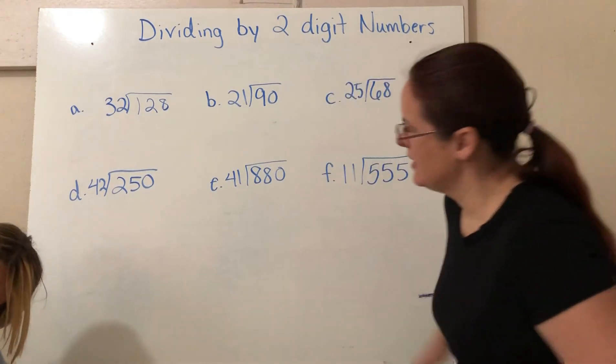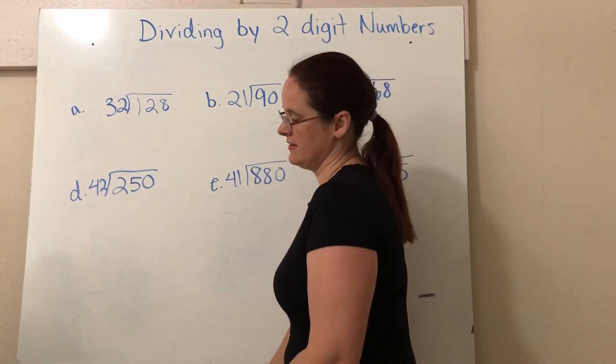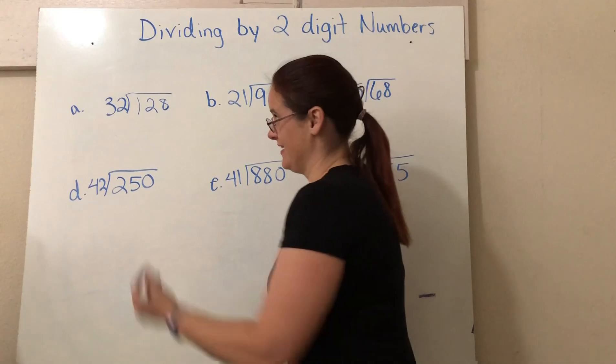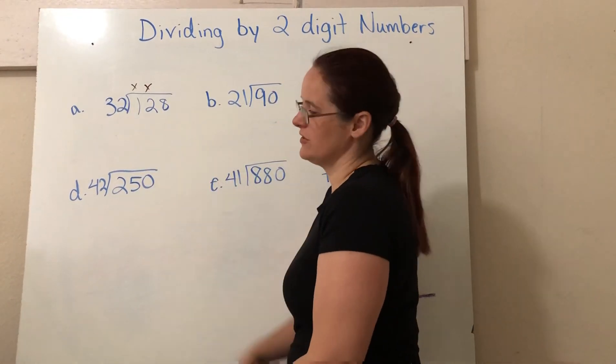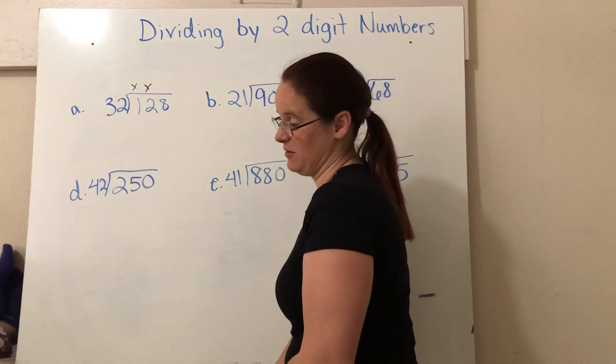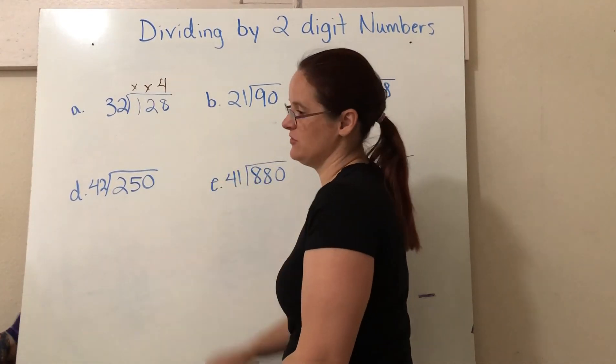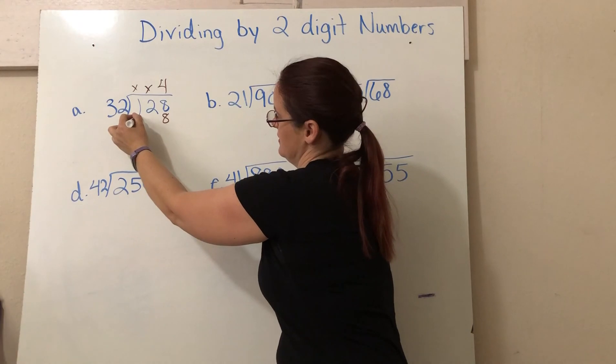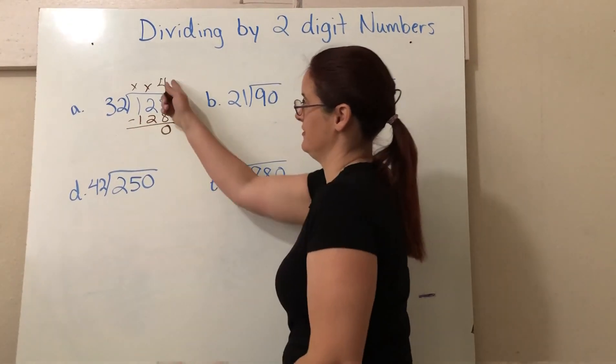All right, Nyla. 32 into 128 here. Does 32 go into 1? Nope. Can 32 go into 12? Nope. So 32 going into 128. We round 30 into 120. How many times? That would be four times. So we'll try four first. What's four times two? Four times two is eight. And four times three? That's 12. So look, no remainder. Answer is four.